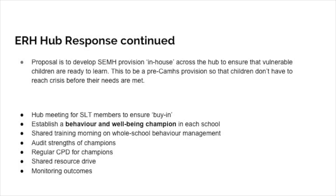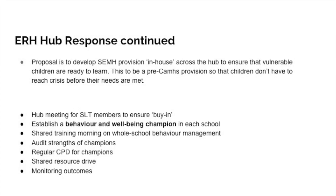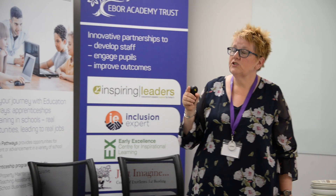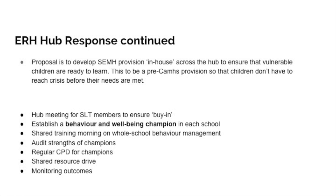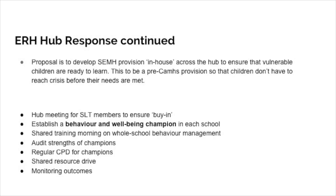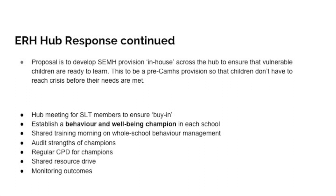What we'd like to do is have a meeting for all senior leadership team members in the hub — I'll make it nice with pizza — because we need them to buy into this. We need to develop a behaviour and wellbeing champion for every school. This will be difficult for smaller schools, but it could be a nursery nurse, a TA, a part-time role — it doesn't have to be someone new. We then want to train the whole hub on behaviour and wellbeing, go out into schools to continue that, find out what our current champions' strengths are and share them, give them regular CPD from our ESIT member, build a shared resource drive, and monitor outcomes.